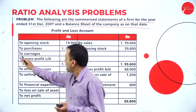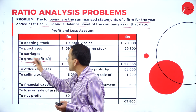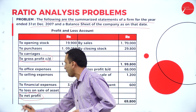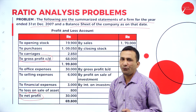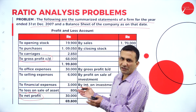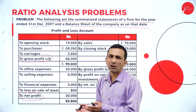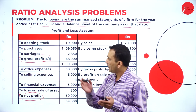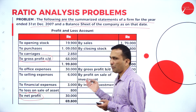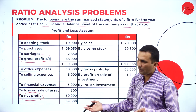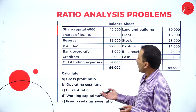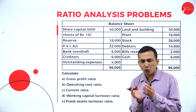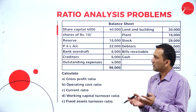There is a trading and P&L account. With the help of trading, we identify the gross profit; with the help of the P&L account, we identify the net profit. Using this information, we try to find out various ratios. The balance sheet is the position statement used to check the business position.